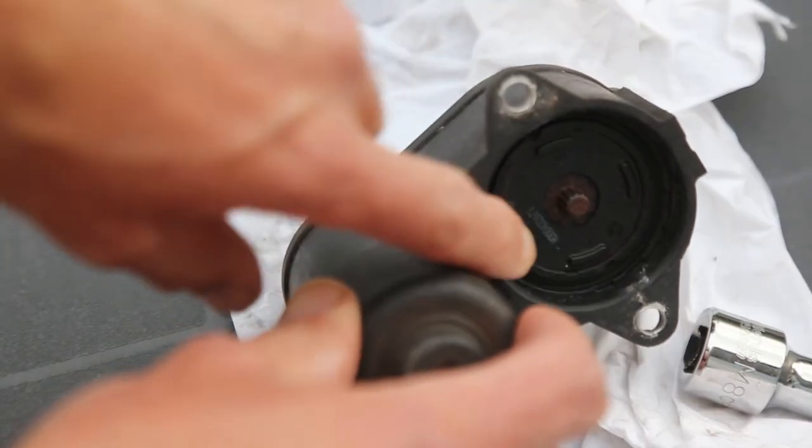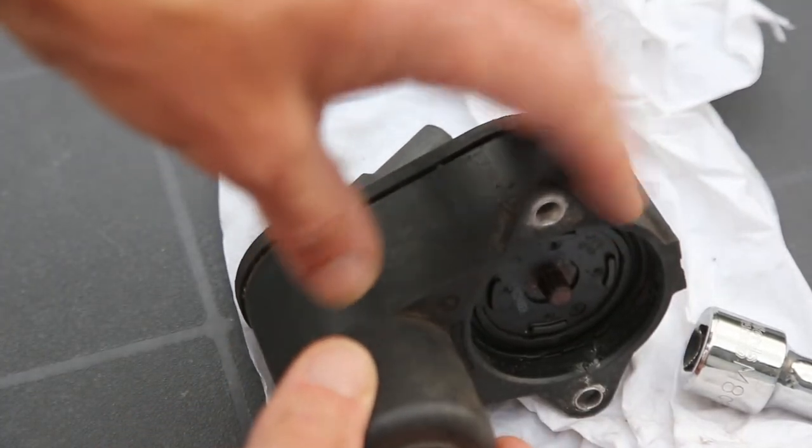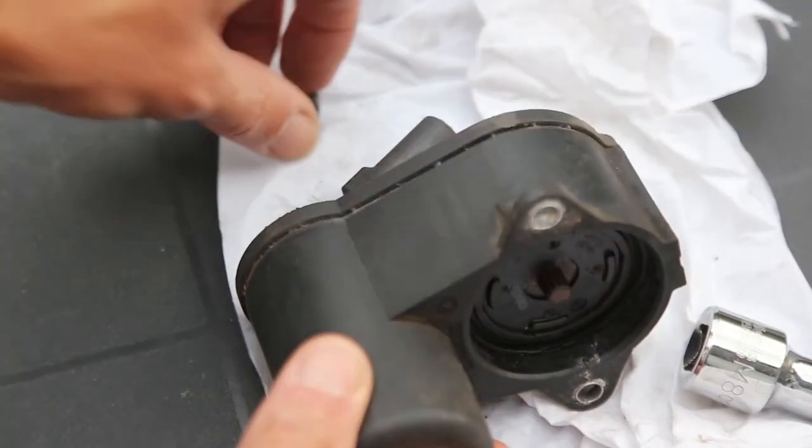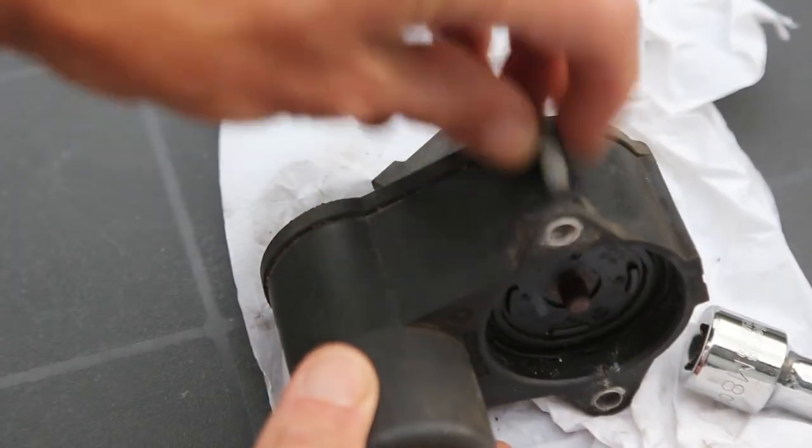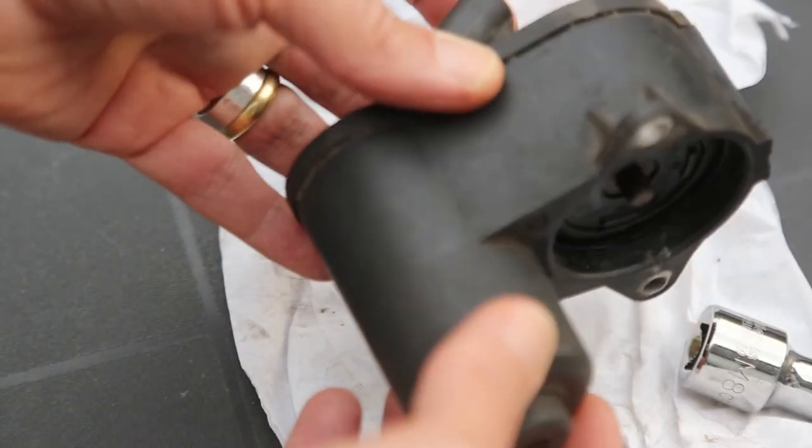So in order to refit the new one, it's a case of again remove this from the caliper using the two bolts to undo it, remove the lead and you can then put the new one on.